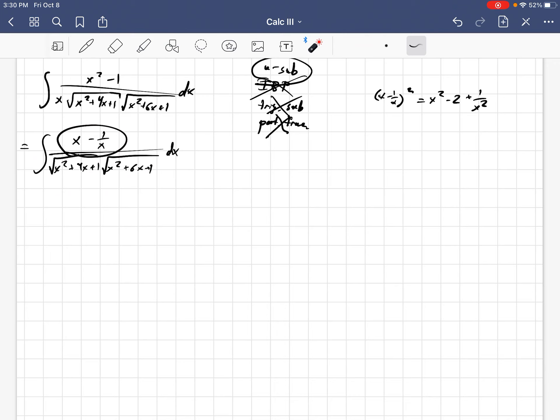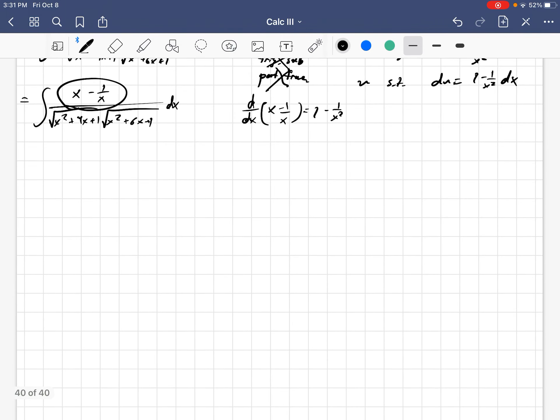And then I could divide x again into the numerator here, and I'd have a 1 minus 1 over x squared. Well, if I have 1 minus 1 over x squared on the top, I'd probably want to pick a u such that du is 1 minus 1 over x squared dx. Well, when I differentiate x minus 1 over x, I get 1 minus 1 over x squared. That's what I should do.